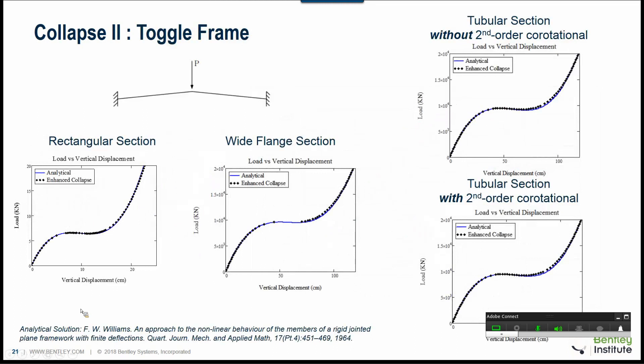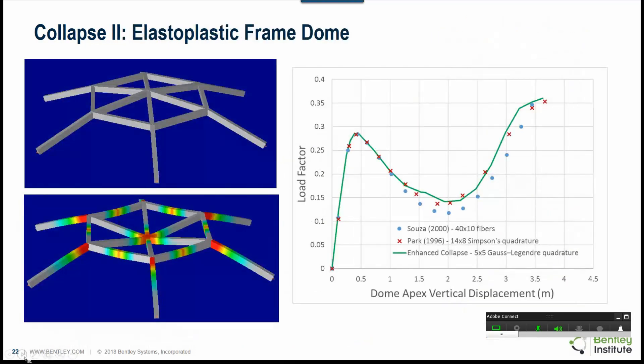This is a toggle frame and a typical snap buckling problem and again here we can see that the new collapse compares very well with existing analytical solutions. Again, this is an elastoplastic dome frame and again this is typical of snap buckling again. However, this is elastoplastic behavior and again we get very good comparison with the theoretical solutions.